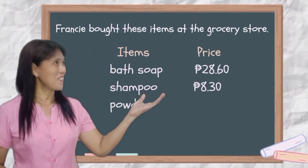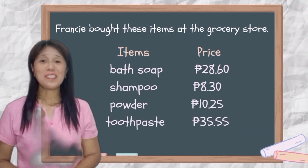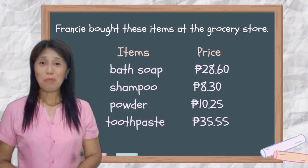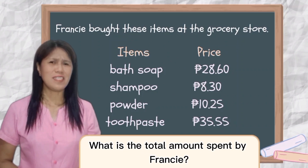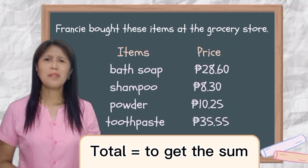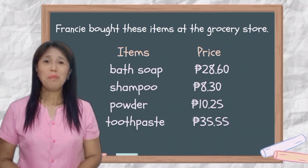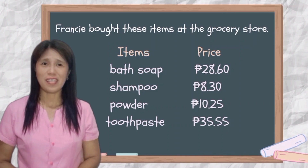To continue, let's review first our previous lesson. Look at the screen. There's a list of items Francie bought at the grocery store. Using the table of expenses, what is the total amount spent by Francie? The word total means to get the sum. Let's now apply what we have learned about addition and subtraction of decimals.